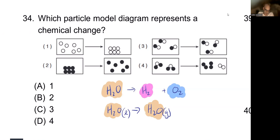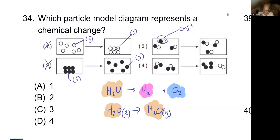Looking at the diagrams: the first option shows one white sphere going from a gaseous state to a solid state — it's compressed, but hasn't changed chemically. It's still just individual white spheres. The second shows the reverse — solid to gas. Both can be eliminated from the chemical change point of view. The third shows a compound that remains the same compound; nothing really happened, so we eliminate that too.